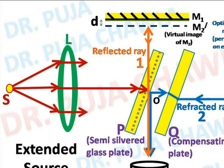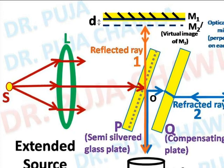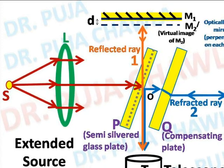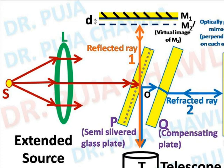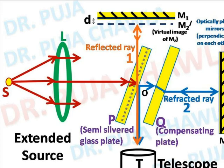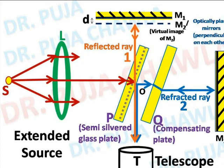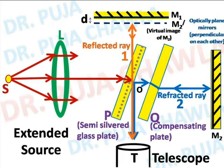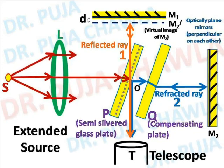Next is the telescope T. There is also another component Q, named as the compensating plate — we will discuss why this plate is introduced in the path of beam 2 in the next video. For now, the complete apparatus consists of: S and L constituting an extended source; semi-silvered glass plate P inclined at 45 degrees; mirrors M1 and M2 which are mutually perpendicular to each other; and telescope T for receiving the light and showing the interference pattern.